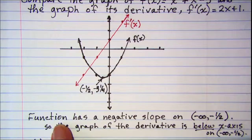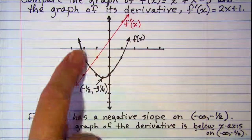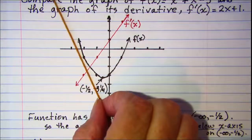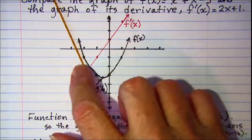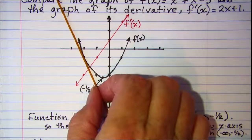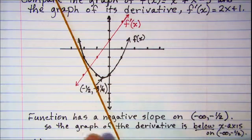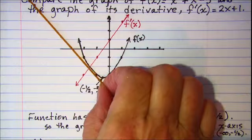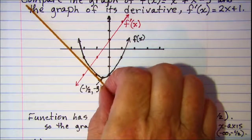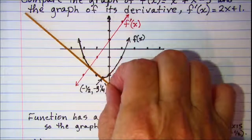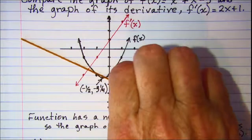Our function has a negative slope — remember, when you're looking for the slope you're looking at the slope of the tangent line. So at any given point, for example this point right here, the tangent line represented by this piece of pasta is shown here. The tangent line just touches the curve at one point, and we have a negative slope of the tangent line until we reach the vertex.